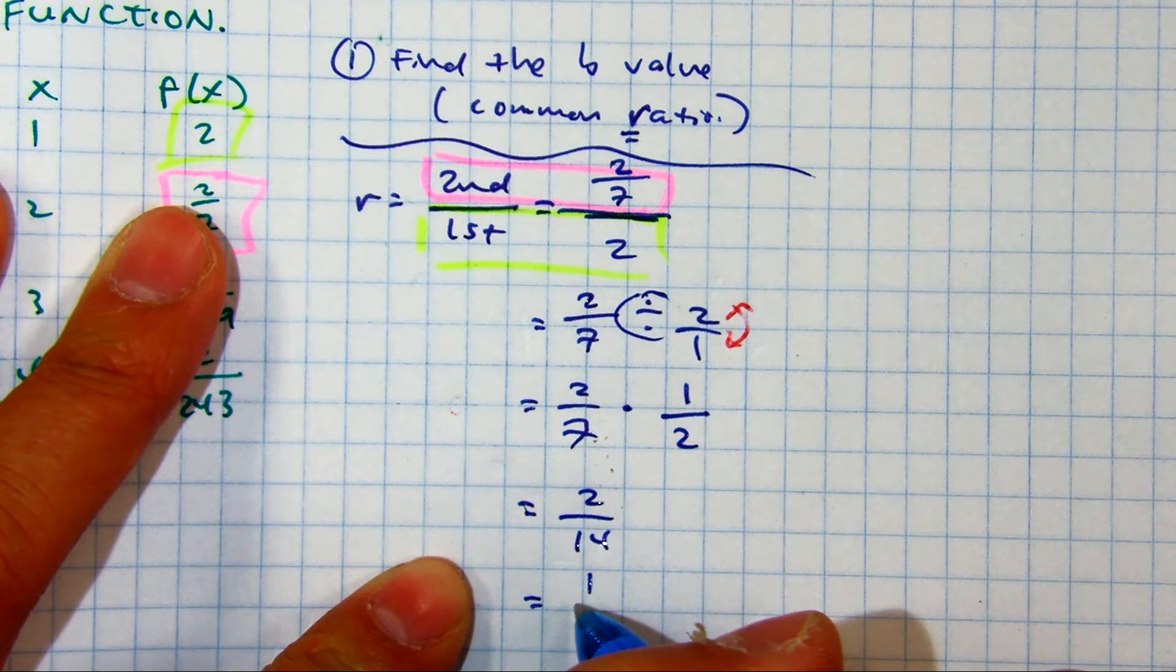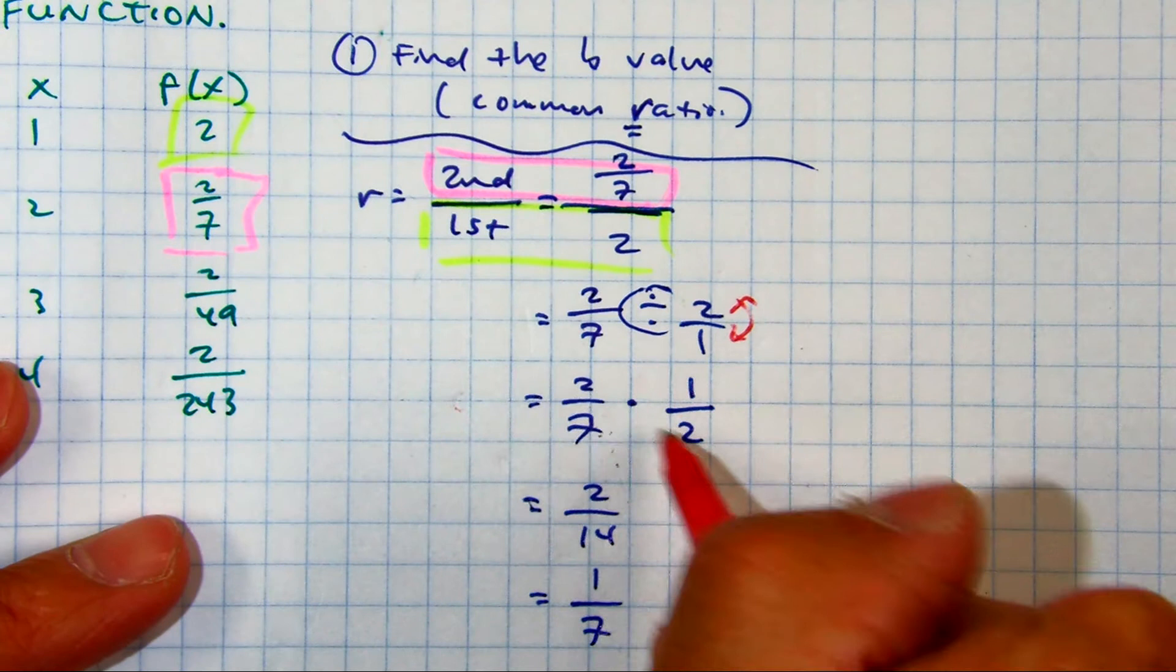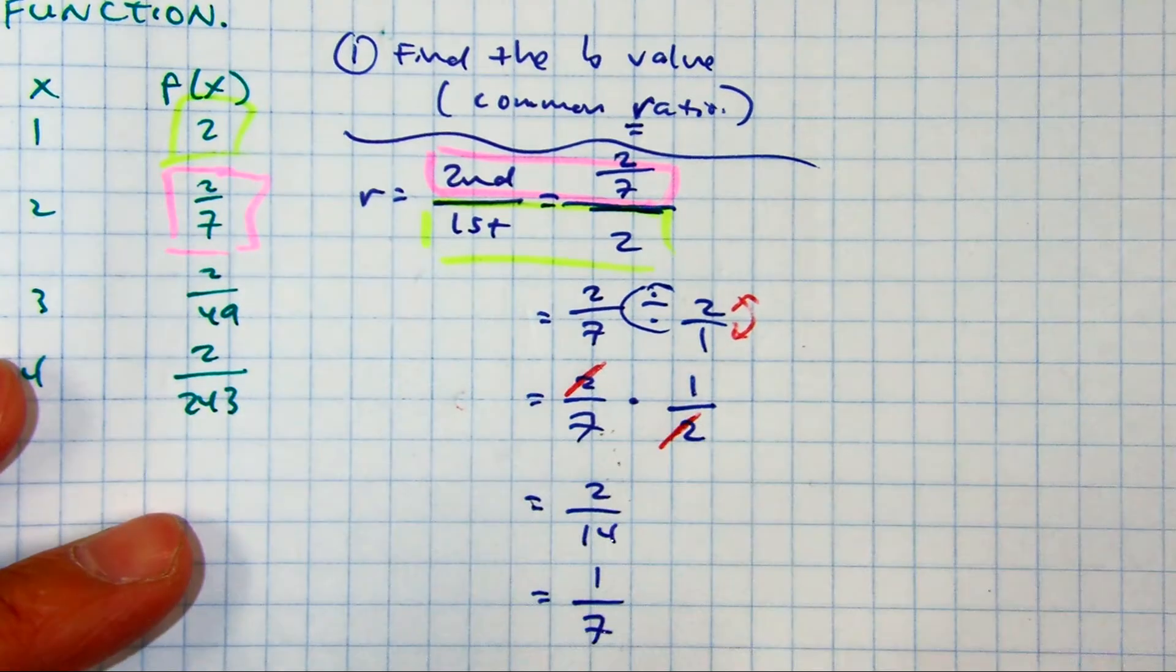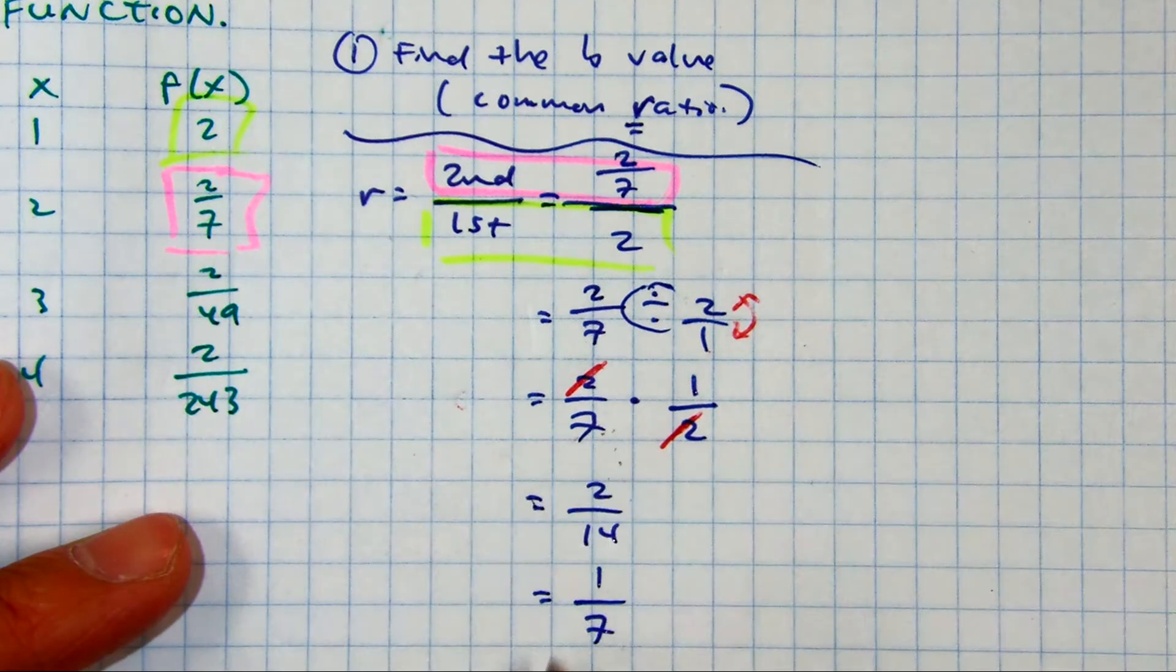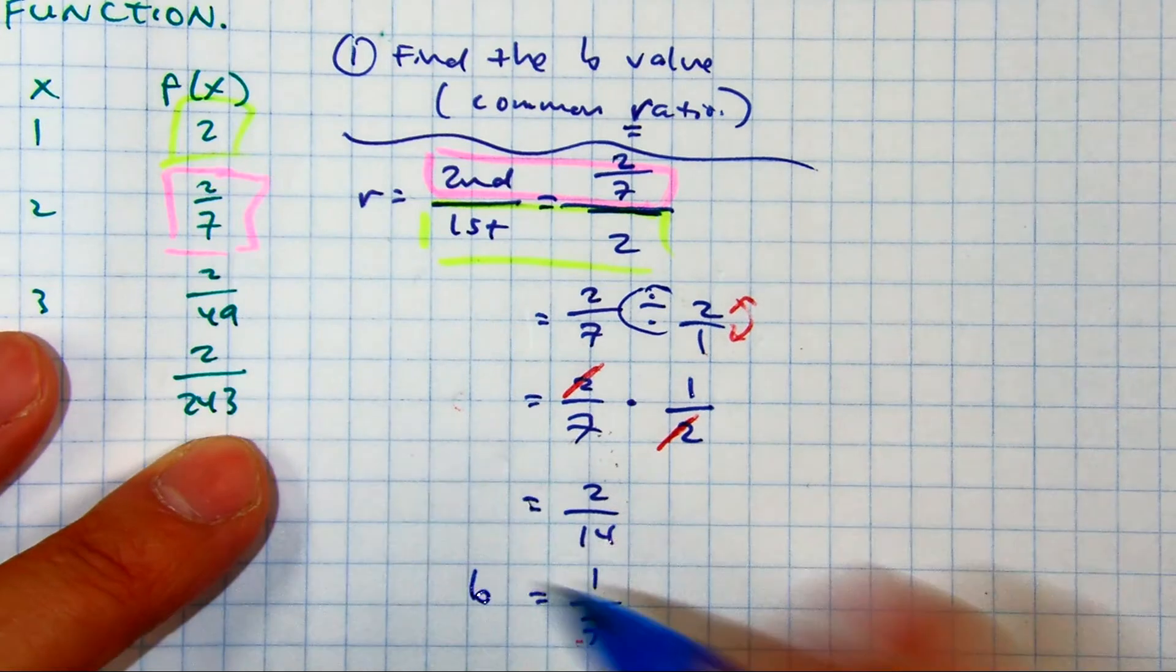Let me show you. The reason why they call it cross-canceling is because those twos, two divided by two is one. You're left with one seventh. So our R value, or our B value, is equal to one seventh.